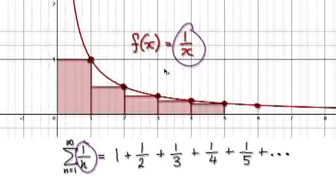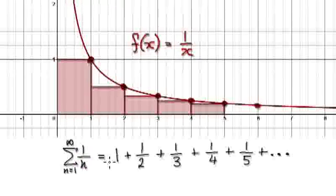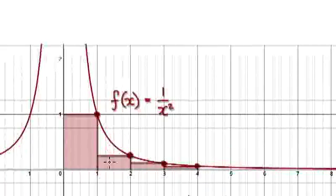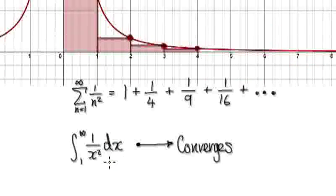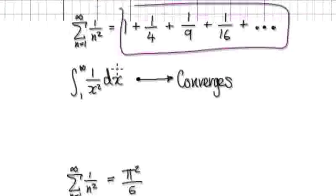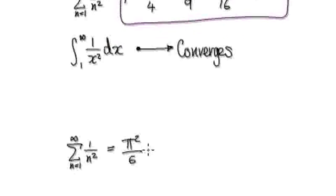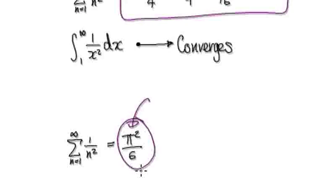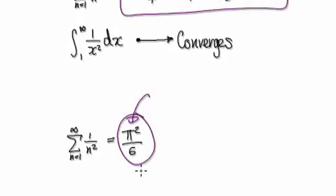And another way of interpreting series would be this. As it turns out, the series 1 over n squared will converge to some strange number — pi squared over 6.